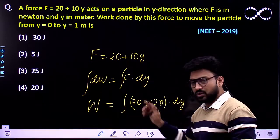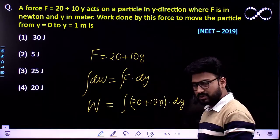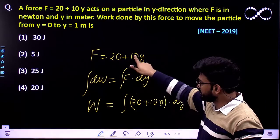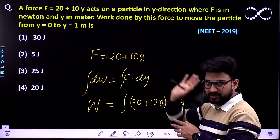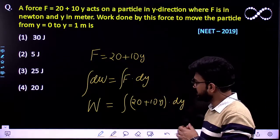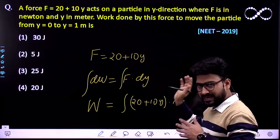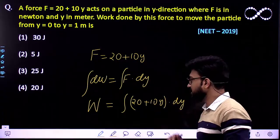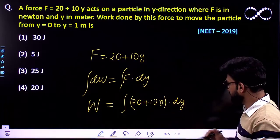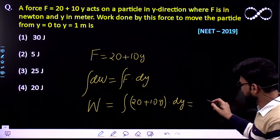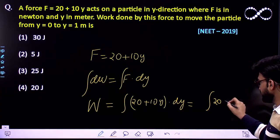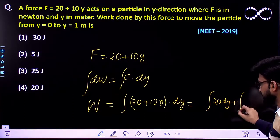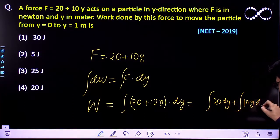And the dot product of these two would also be F into DY because force is acting in the Y direction and DY is also taken to be in the Y direction only. So the angle between them is 0 degrees. So it would be multiplication of F into DY. So this would be equivalent to 20 DY plus integration of 10Y DY.